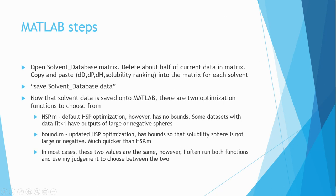These are basically the main steps that I take when I use MATLAB. I open the solvent database matrix. I will delete about half of the current data in the matrix, just in case the data that I'm importing has fewer solvents than the current data in that matrix. And then I copy and paste the delta D, delta P, delta H values and the solubility ranking into the matrix for each solvent. And then I type save solvent database data, which just makes sure that the algorithm can actually use this new matrix that I just altered.